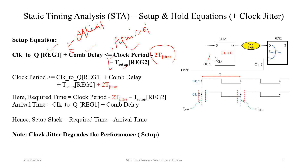Now let us see how clock jitter can affect the setup equation. If we take the worst case clock jitter scenario in the setup equation, we will be satisfying all other scenarios. So if the worst case setup scenario fails, then definitely the setup requirement will be failing. And if the worst case setup scenario passes, that means for all other values of clock jitter we will be meeting our setup requirement.